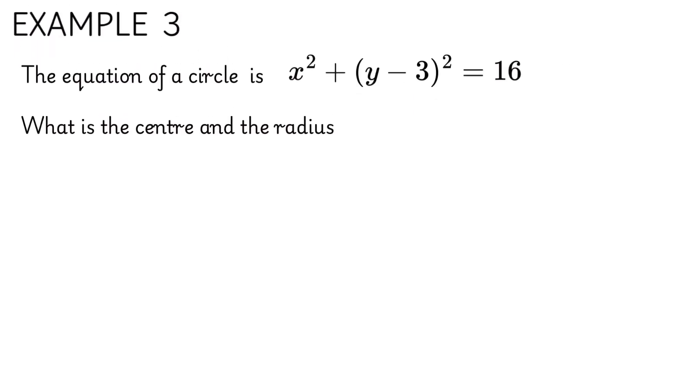So now we've got example 3 which is finding the center and the radius of the circle x squared plus y minus 3 squared is equal to 16. Notice that the first expression is just written as x squared and how we deal with that is we can write it as x minus 0 squared.